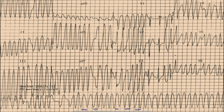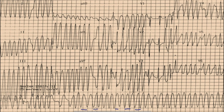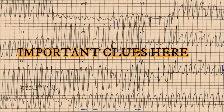Whenever we get an irregular broad complex tachycardia, the first thing we think of is atrial fibrillation with aberrancy. As you can see, lead V1 has a deep S wave and there is a prominent R wave in lead V6, so this is a left bundle branch block morphology. So most of us will think of it as atrial fibrillation with left bundle branch block.